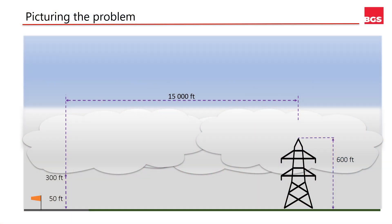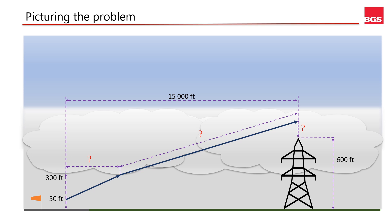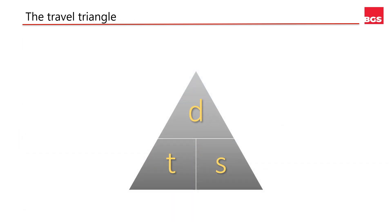Let's start by drawing this out to see what we know and what we need to find out. Here's a gloomy day with our 300-foot cloud base. Our obstacle is 600 feet above the ground and 15,000 feet from the takeoff distance required, which is our 50-foot screen height. The flight path begins at the 50-foot screen height, climbs to the cloud where an engine fails, and then we continue upwards at the single-engine climb rate to avoid the mast. There's only one formula we need: the travel triangle — distance is speed times time, time is distance over speed, and speed is distance over time. All the maths comes from this relationship.